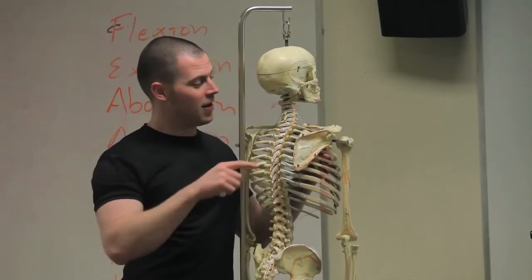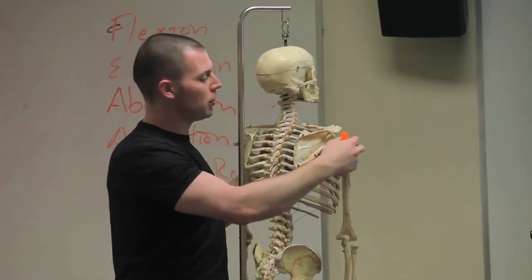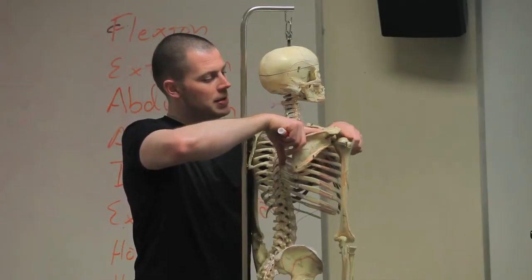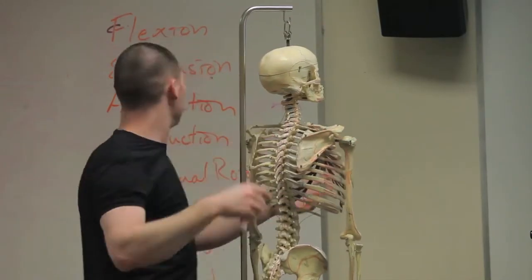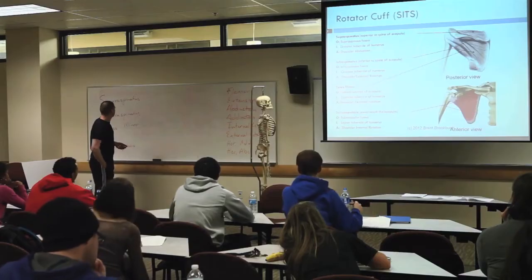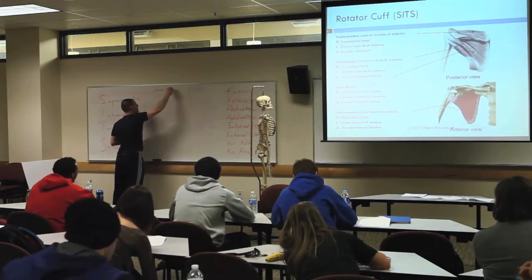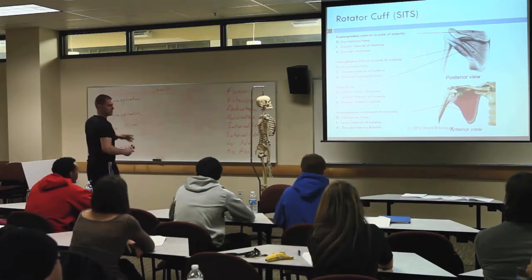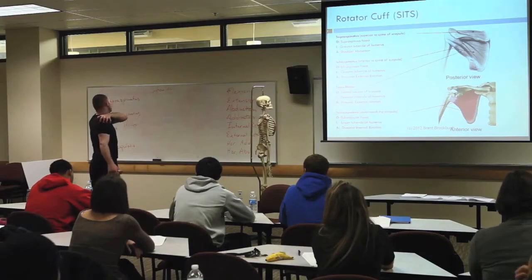Makes sense now, right? Your supraspinatus runs in here, goes underneath your acromion process, and attaches into the greater tubercle of the humerus by running across the top of the humerus. If it goes from the top of the scapula to the top of the humerus, what joint are we talking about? Shoulder. We're still using the same word bank. So what do you think it's going to contribute to joint-action-wise? It contributes to especially the initial part of abduction — this is an abductor.